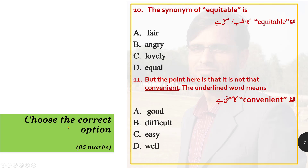Choose the correct option — five marks. Option number 10: the synonym of 'equitable' is? Options are: fair, angry, lovely, equal. The synonym or equivalent meaning of 'equitable' is 'fair' — meaning just or appropriate. Option A is correct: the synonym of equitable is fair.